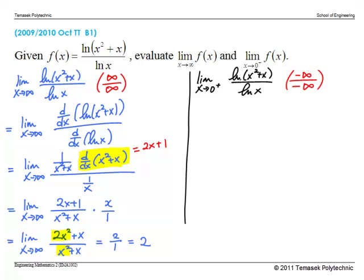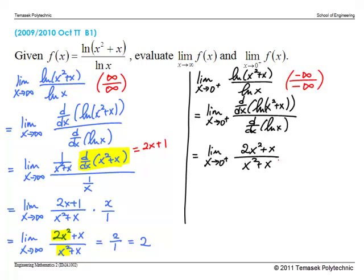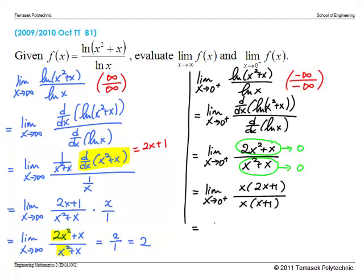We do the same for the second limit. Up to the simplification step it is identical, but now taking the numerator and denominator limits separately both give 0 — yielding the indeterminate form 0/0 again. We can either factorize or apply L'Hospital's Rule a second time; factorizing is easier. After factorizing and cancelling common terms, we take the limit, which gives 1.